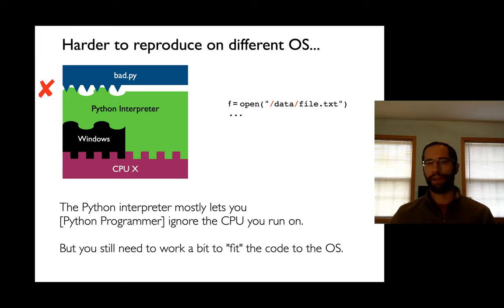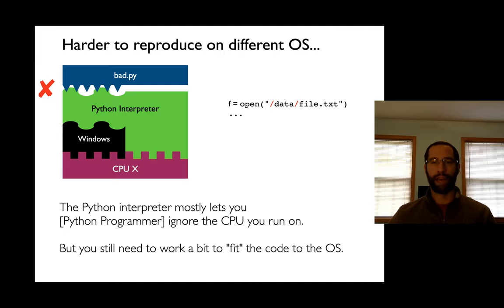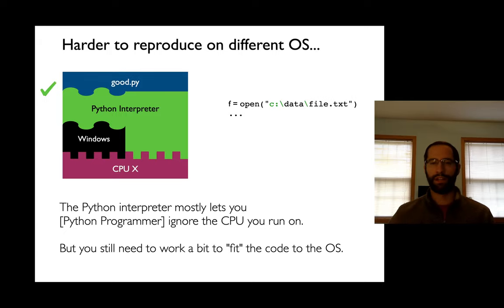The Python interpreter is on top of both the CPU and the operating system. For the pure CPU part it hides those details pretty well, but for the operating system part it has some shape to it. I need to make sure that my Python program — in this case bad.py — fits the operating system. You've all seen examples of that: on the right, I have `f = open('/data/file.txt')` with a forward slash, and that won't work on Windows, but it will if I change it to backslashes. So you have to worry about how to fit your code to the operating system — it's very easy to write things that aren't reproducible.